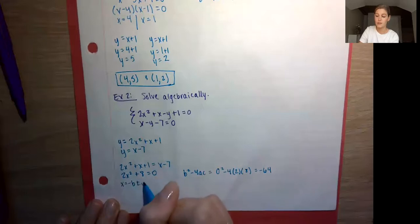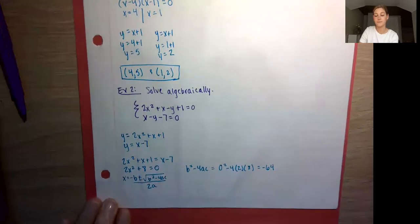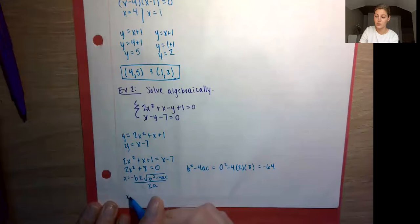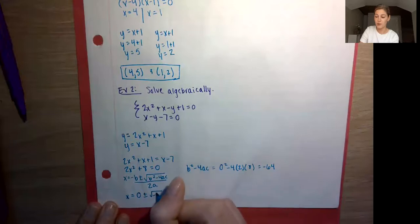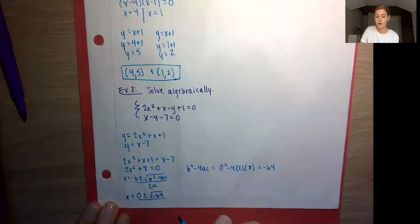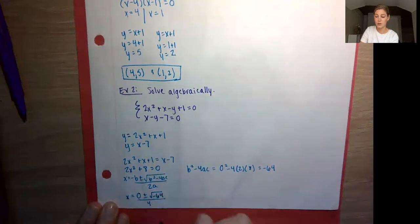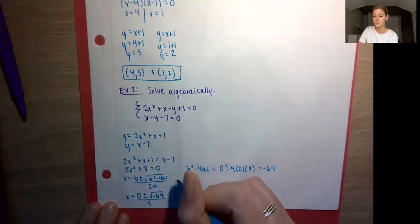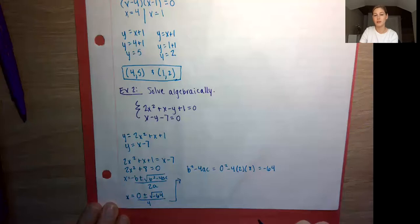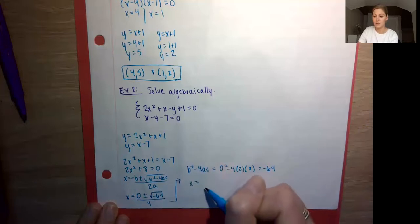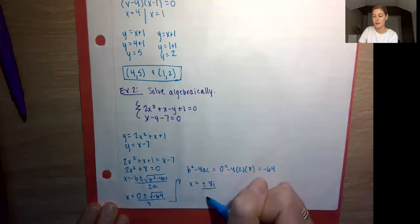Quadratic formula: x = (−b ± √(b² − 4ac)) / 2a. Plugging in: x = (0 ± √(−64)) / 4. The square root of 64 is 8, and bringing that negative out as i, we have x = ±8i / 4, which simplifies to x = ±2i.